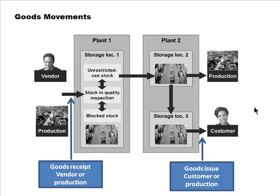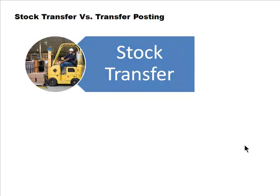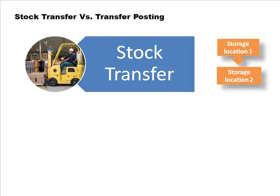Goods receipts are from vendors or production, and goods issues go to customers or to production. Stock transfer is when we actually make a physical movement of stock from place to place — storage location one to storage location two, plant one to plant two, or storage location in one company to storage location in another company.